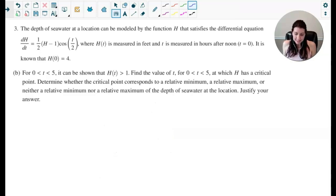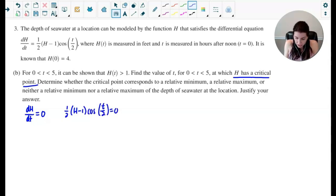In part b it says that for time values between zero and five, it can be shown that h(t) is always greater than one. We need to find the value of t between zero and five at which h has a critical point and then determine whether that critical point is a relative max or minimum or neither and justify our answer. So as soon as I see that h has a critical point, I want to recall that that's when dh/dt or the derivative of h with respect to t would need to be zero. So that means we want 1/2 times the quantity (h - 1) times cosine(t/2) to be equal to zero.